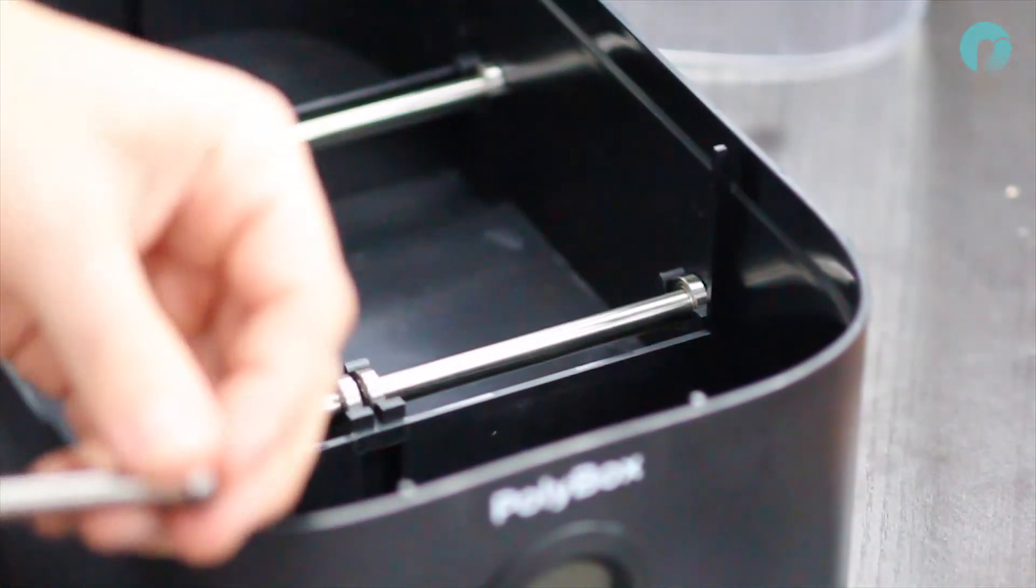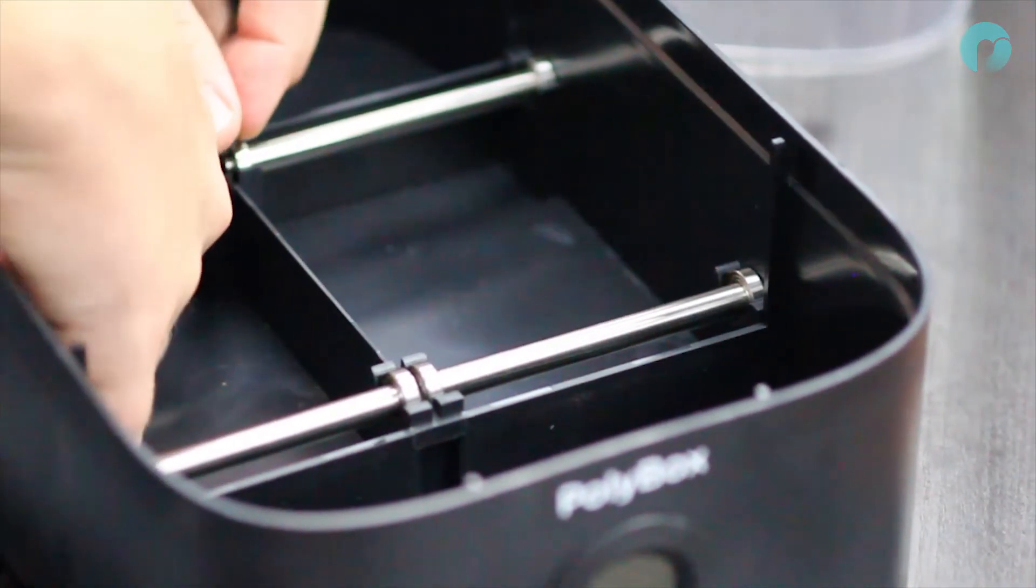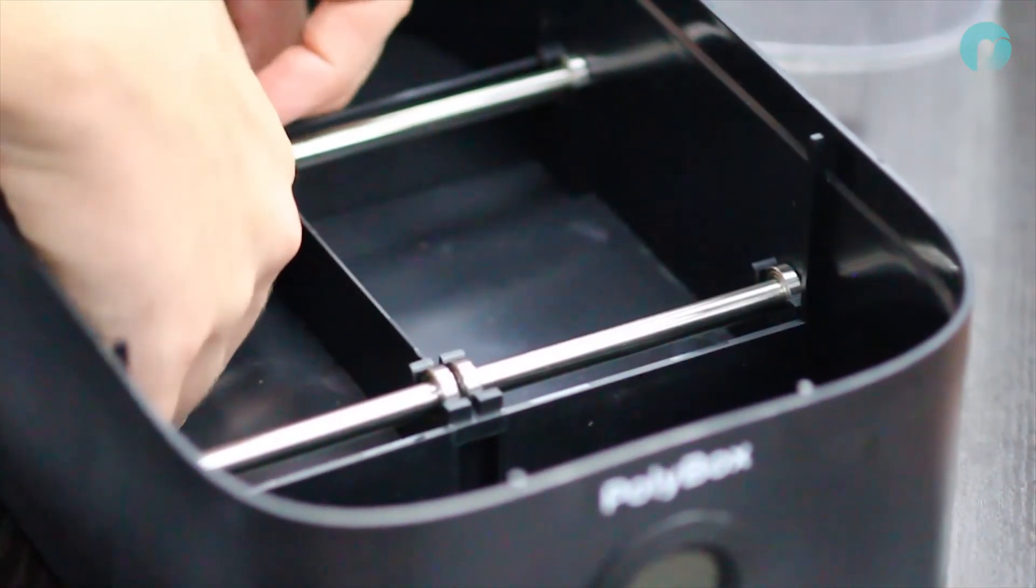Then slide one bearing onto the end of each steel rod, and snap the rods into place in the base of the unit.